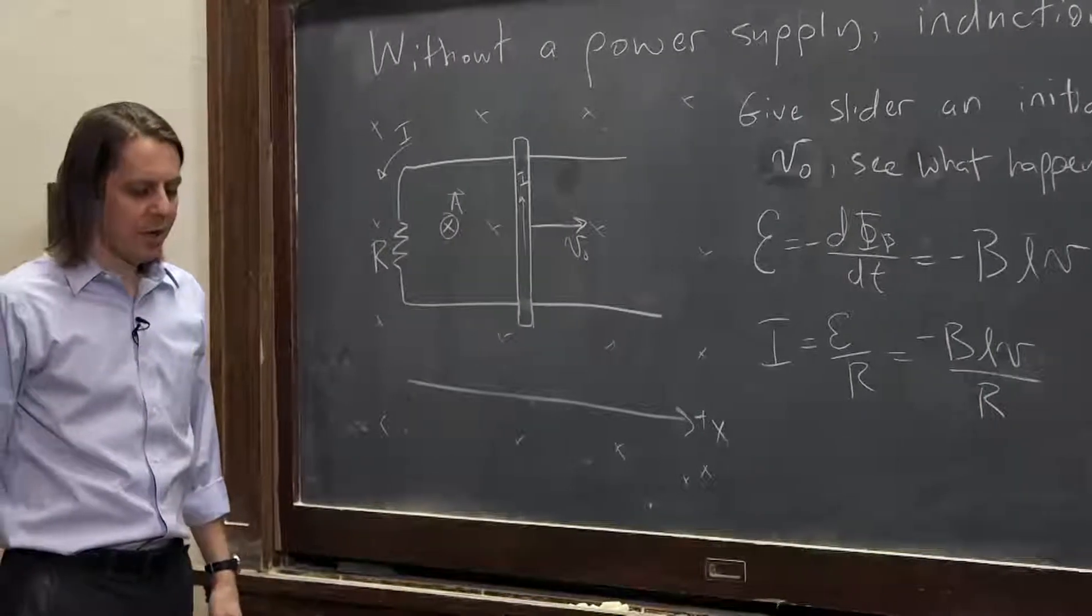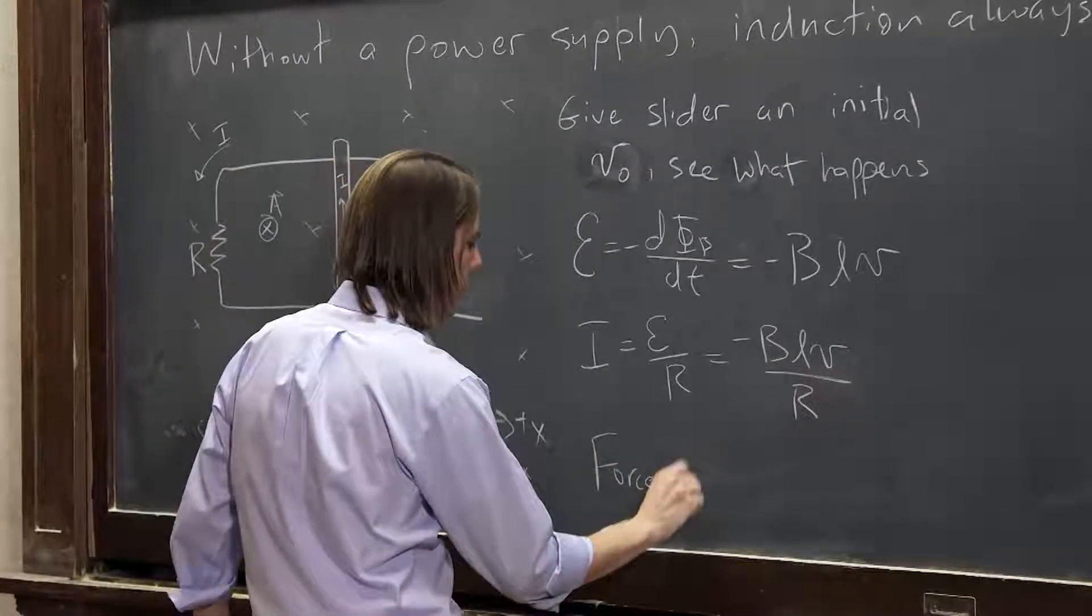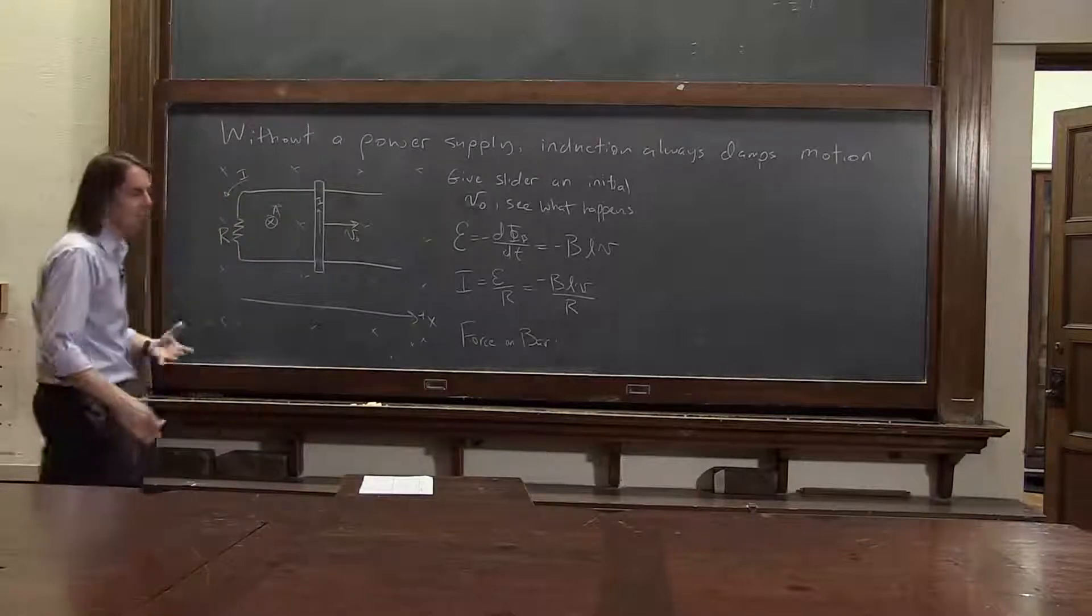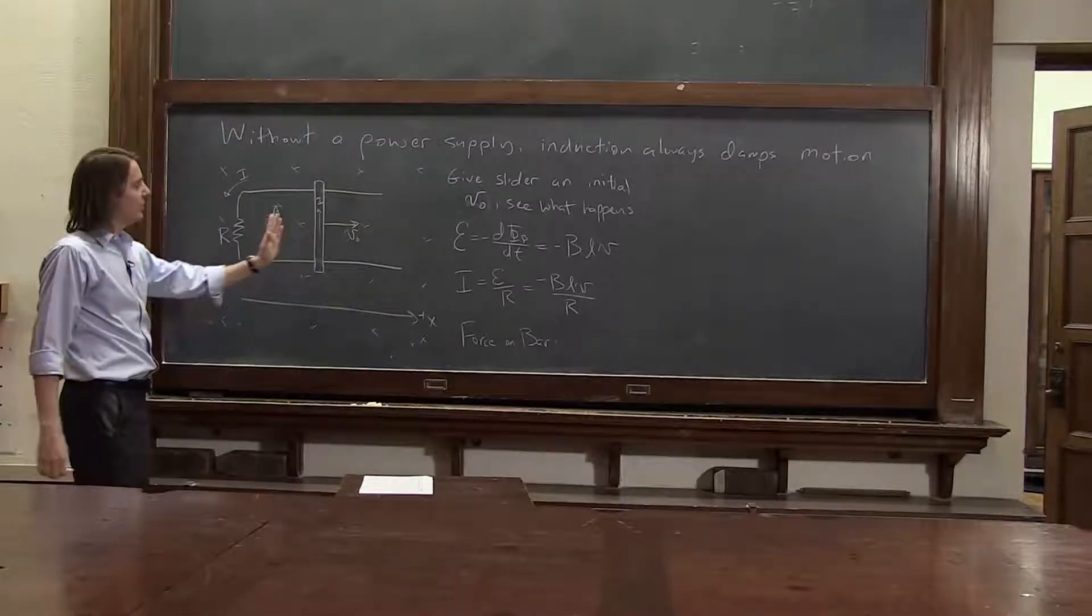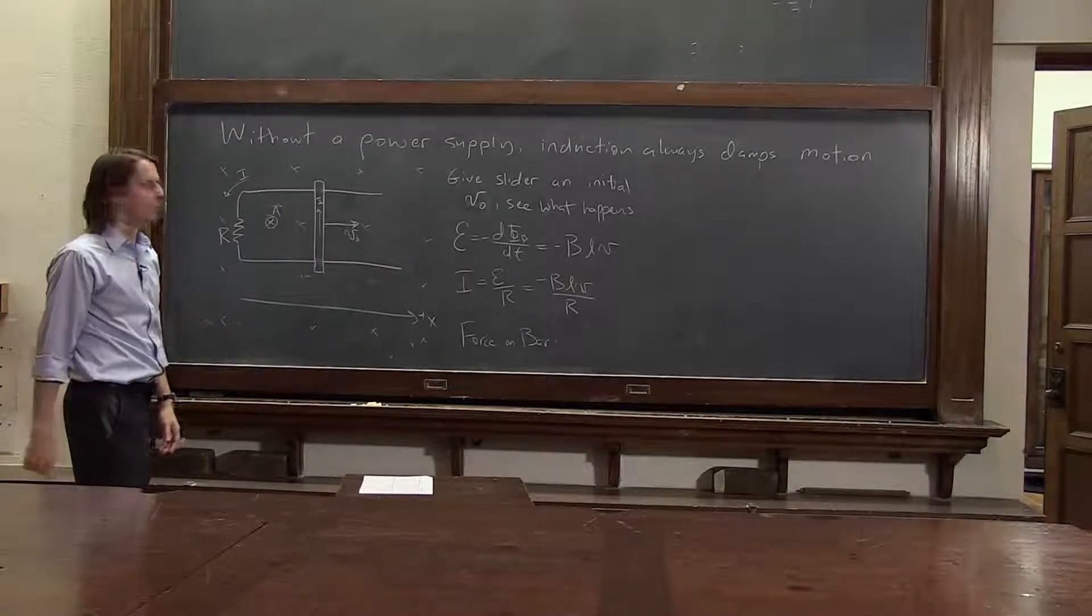Now, let's think about the force on the bar. So if we're going to do kinematics, something has to happen other than just this thing moving. It will experience a force, because now it's carrying a current, and it's in a magnetic field. There is an I, L cross b force.